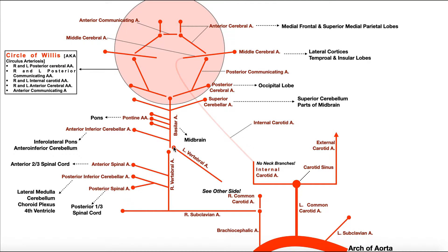The basilar artery has multiple branches. The first is the anterior inferior cerebellar artery, also called the AICA, which supplies blood to the inferolateral pons and the anteroinferior cerebellum. Going up further, there are the pontine arteries on either side, which of course supply the pons.